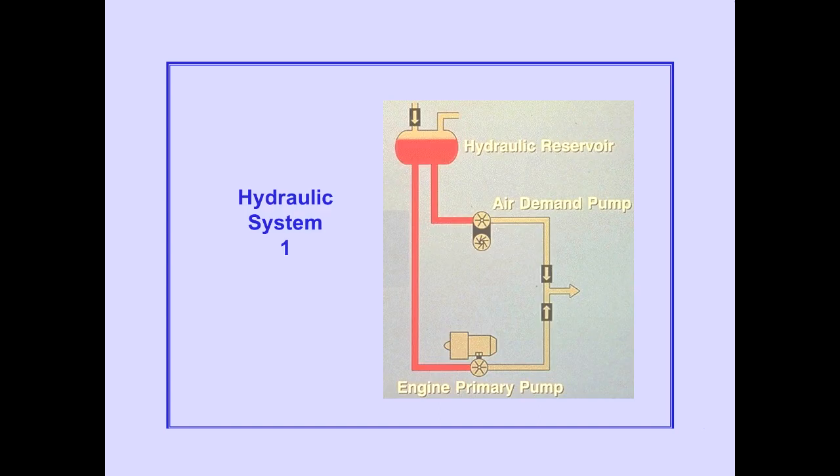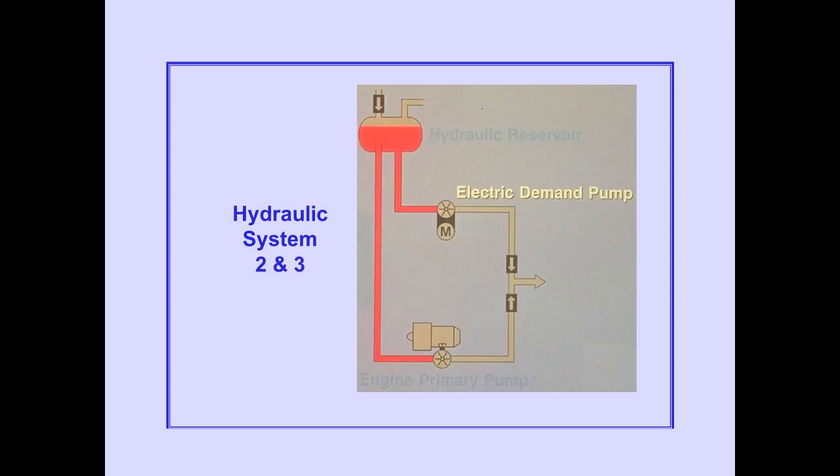Hydraulic System 1 consists of a hydraulic reservoir, a bleed-air-driven demand pump, and an engine-driven primary pump. Systems 2 and 3 are identical to System 1, except the demand pumps are electric rather than bleed-air-driven.